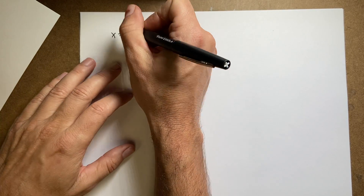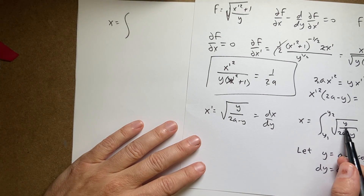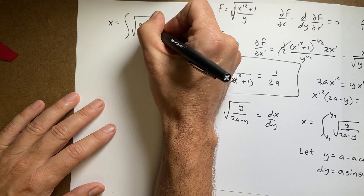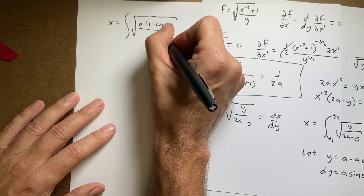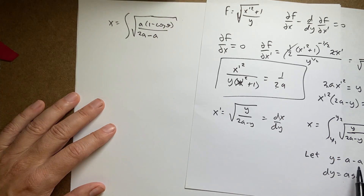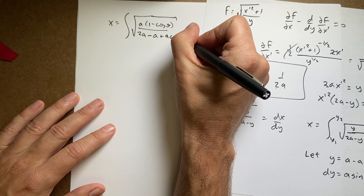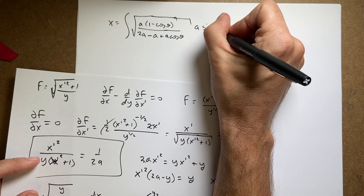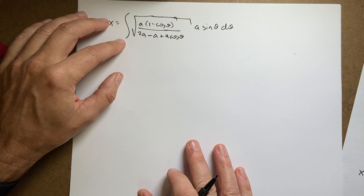Substituting in, x equals the integral of: the numerator becomes a(1 − cosθ), and the denominator 2a − y becomes 2a − (a − a cosθ) = a(1 + cosθ). So I have the square root of a(1 − cosθ) over a(1 + cosθ), times a sinθ dθ. The a's mostly cancel, leaving a times the integral of sinθ times sqrt((1 − cosθ)/(1 + cosθ)) dθ.